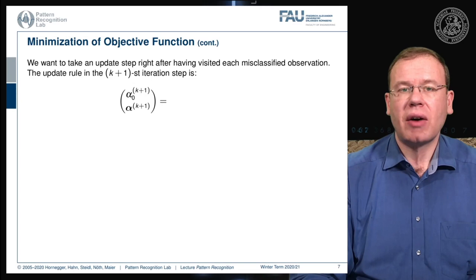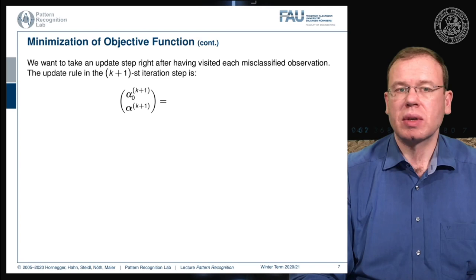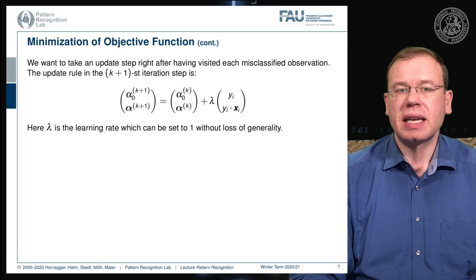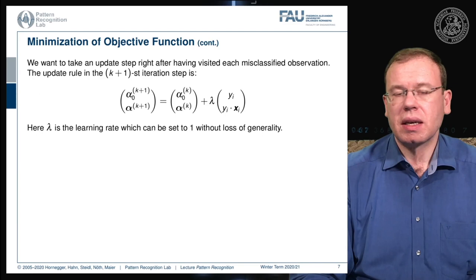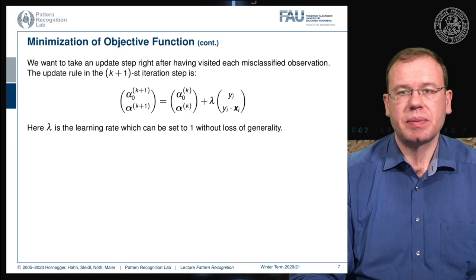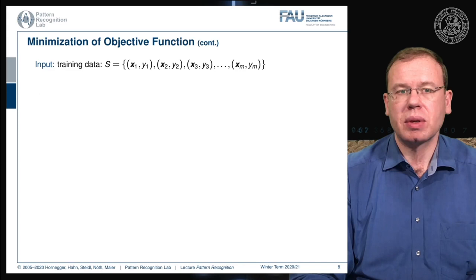Looking at the update rule for the special case where we update after each visited misclassification, we get a new estimate of α₀ and α at every observed misclassification. The update from step k to k+1 in vector notation is: the previous iteration values plus λ times [yᵢ, yᵢxᵢ], where λ is the step size. Generally λ can be set to one as a simplification.